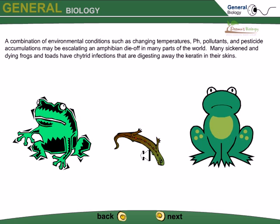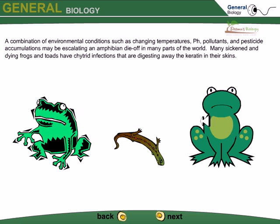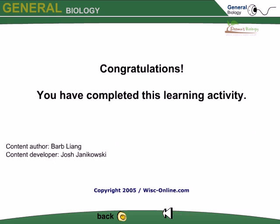Many amphibians have their epidermal tissue filled with chytrids, which feed on their skin — causing them to become sick and eventually die. Chytrids live on living materials containing keratin or cellulose, and they are very efficient at digesting both. Research on chytrids is therefore really important and is becoming a major concern nowadays, given their ecological impact and potential biotechnological applications.